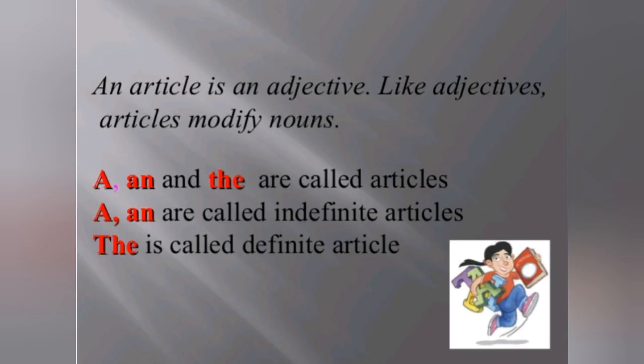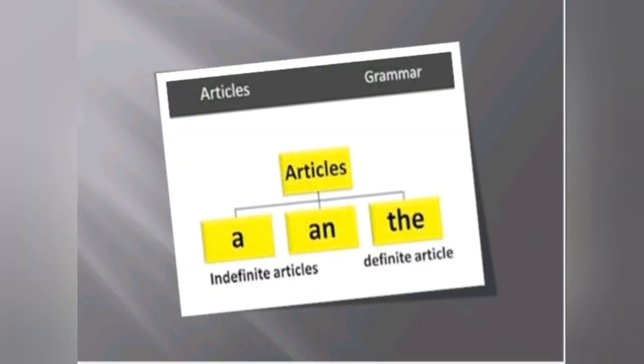We all know that there are three articles: a, an, and the. But actually, an article is an adjective. Like any adjectives, these articles also modify nouns. A and an are called indefinite articles. The is the definite article.